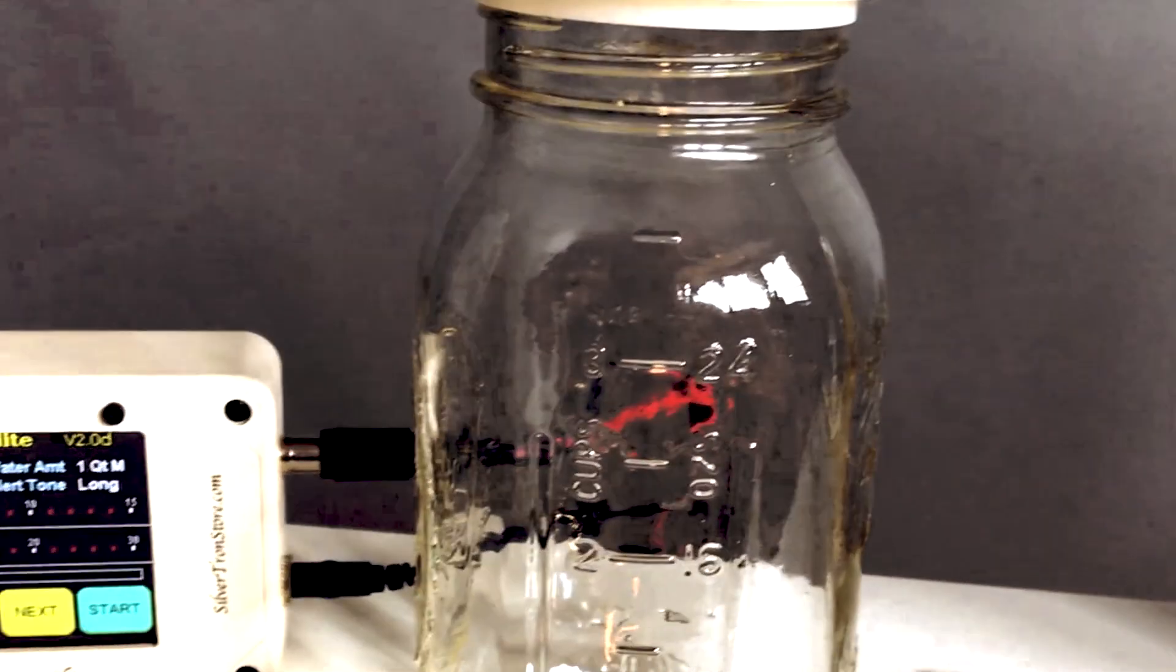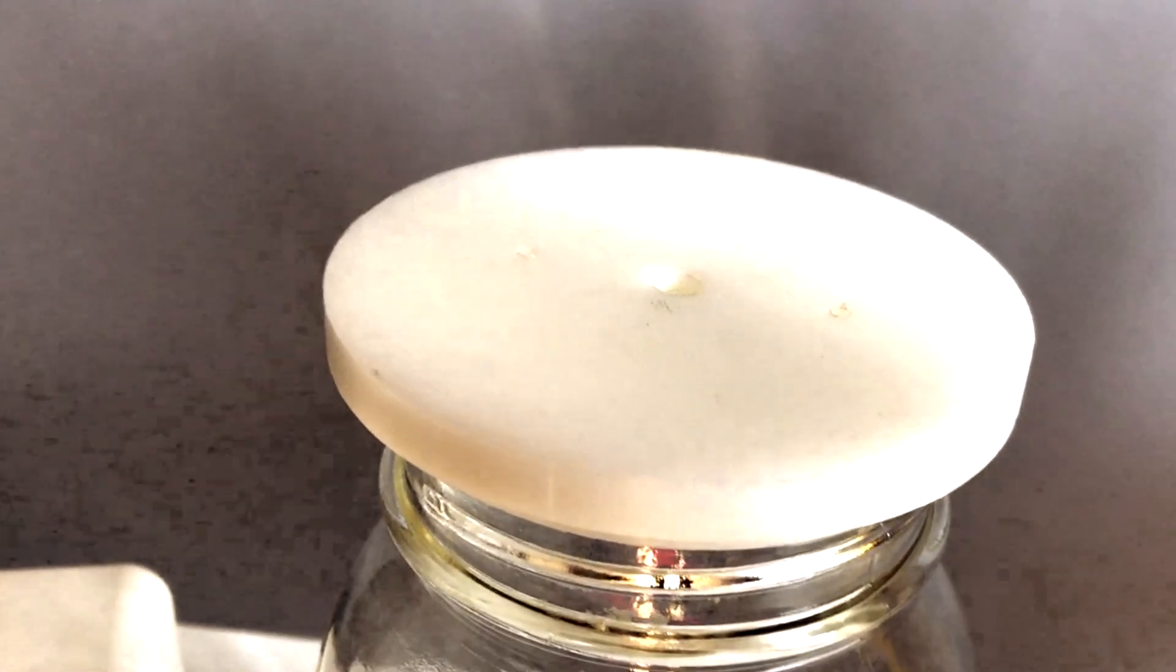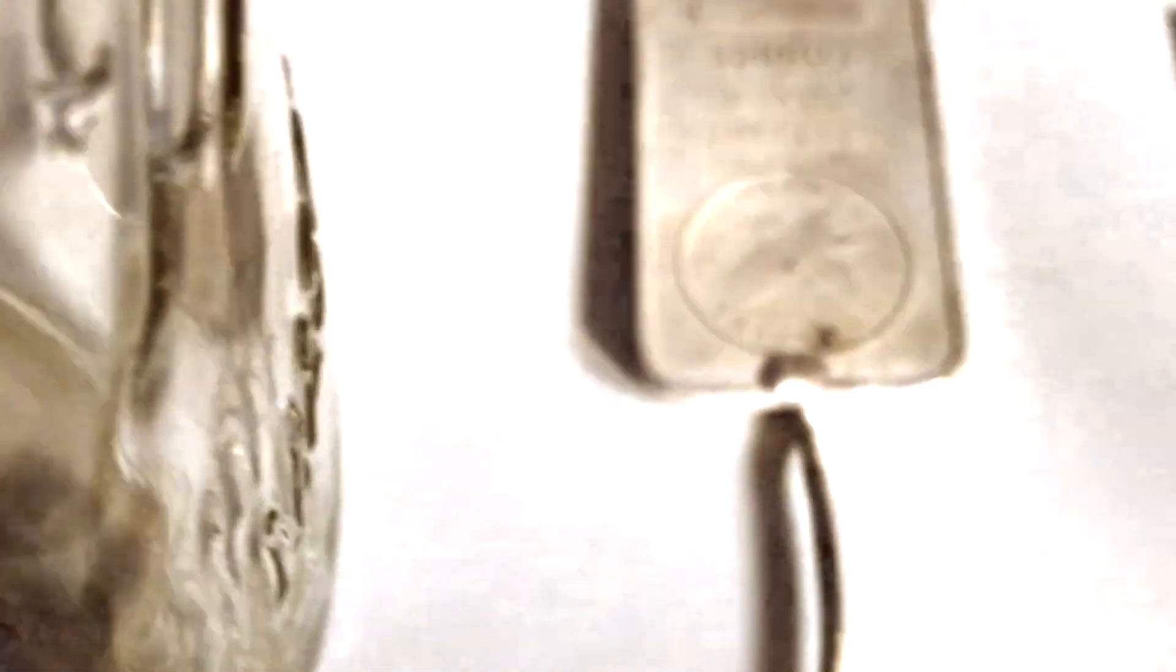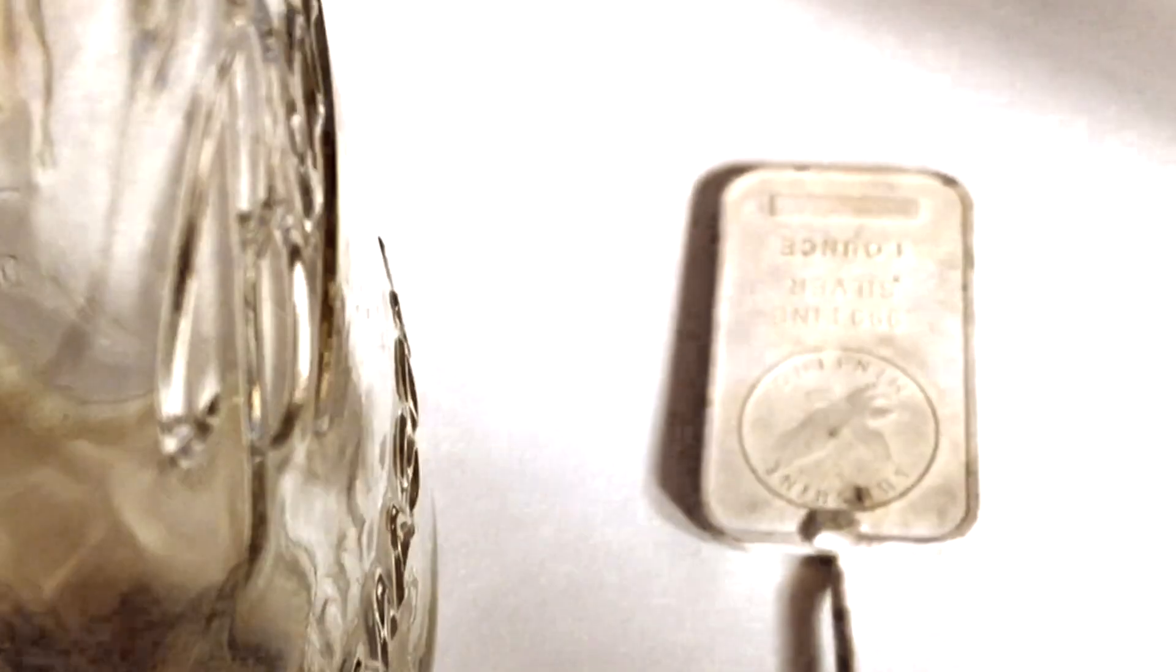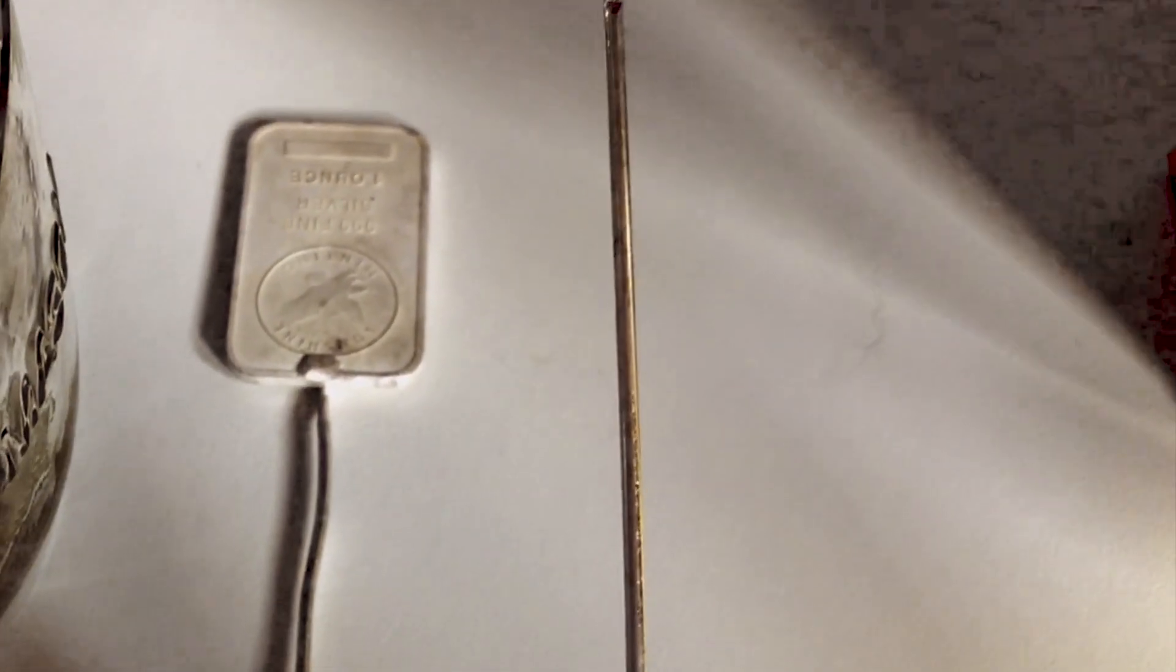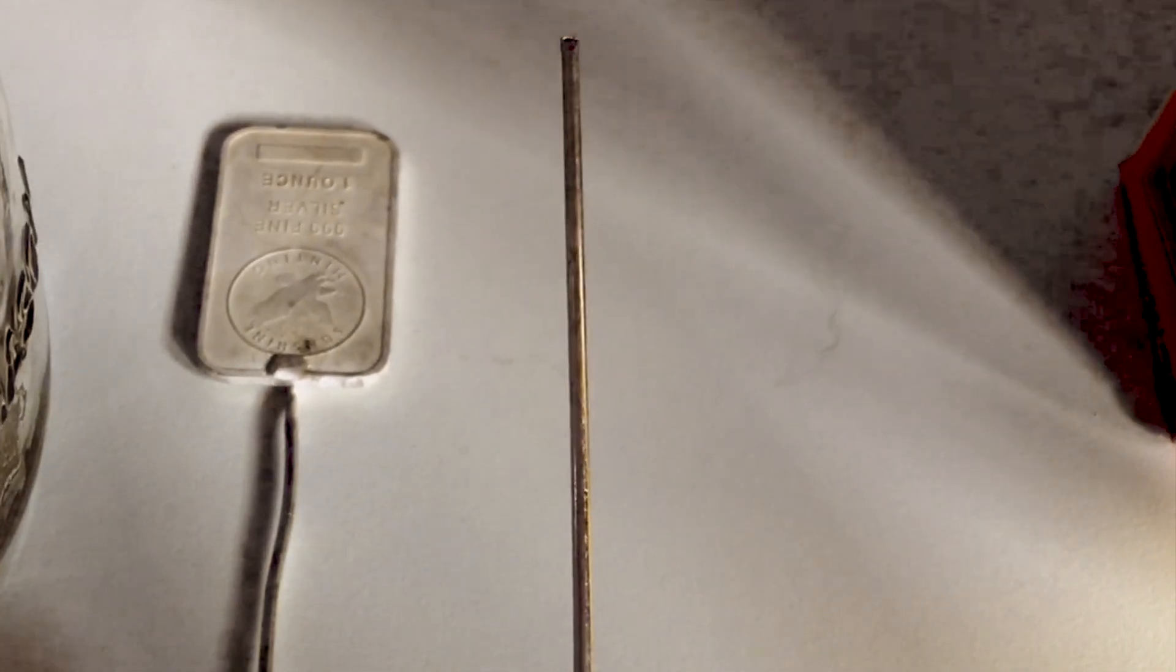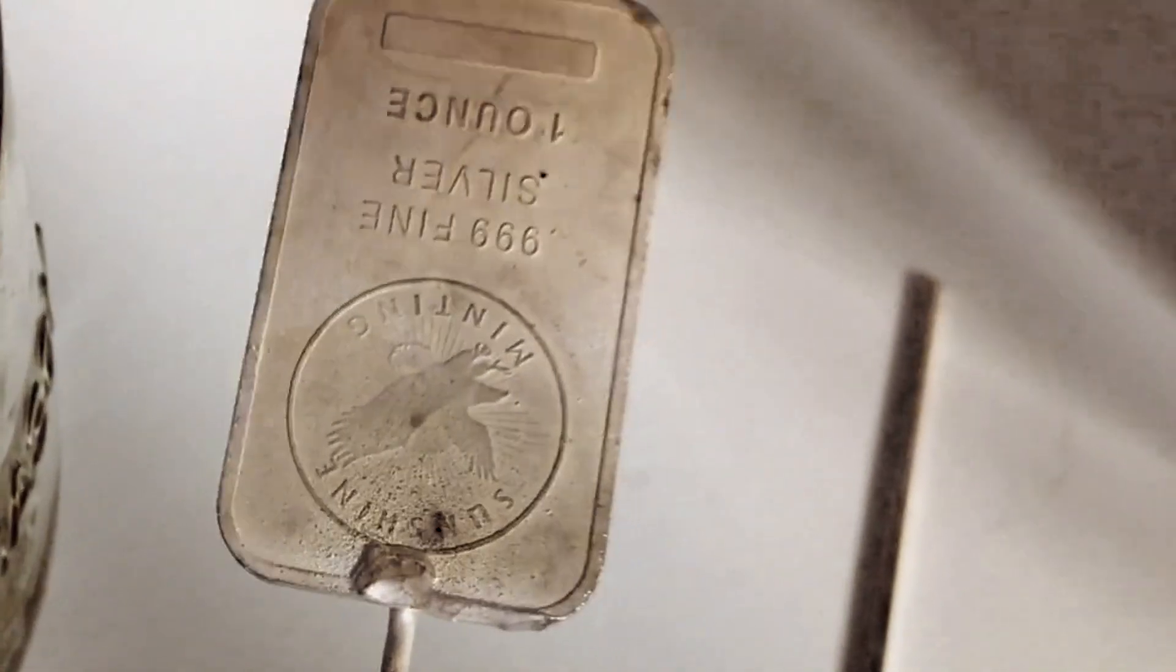Here's my one quart mason jar, the lid that goes on top of my mason jar, which was specifically designed to go on a one quart mason jar. Now I have my silver bullion anode. This is going to connect to the positive red wire. You will get years of use out of this bullion bar. This is called the cathode. It's going to connect to the black wire. Now you could also use a copper wire, but this is what came with the Silvertron Elite, and I bought this separately from the same company.